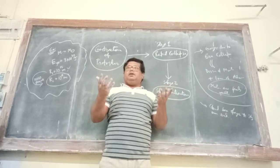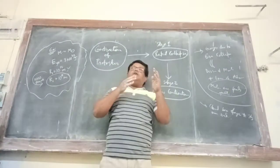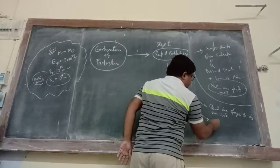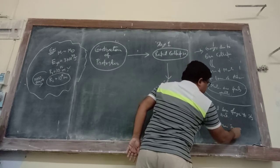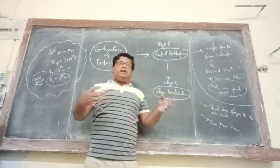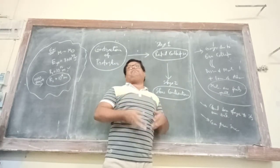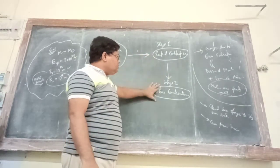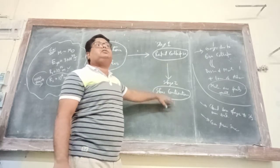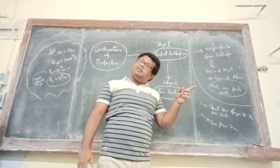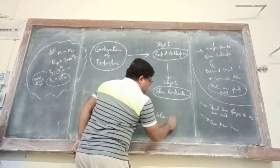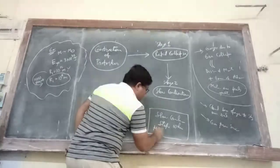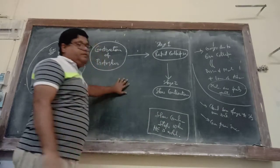So this is the way things happen in cloud contraction: first the free-fall stage, then the slow contraction stage. The slow contraction stops when hydrostatic equilibrium is established. You must remember these stages — they are the most pivotal, important points. Contraction of a protostar: first stage is rapid collapse, next is slow contraction.